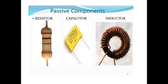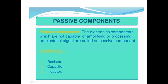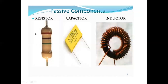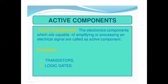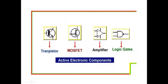Passive components are not capable of amplifying or processing — that is the passive component. Examples are resistor, capacitor, and inductor. Active components are capable of amplifying or processing electrical signals. Examples are transistor, MOSFET, amplifier, and logic gates. These are the symbols of active electronic components. In summary: active components deliver power or energy to the circuit, while passive components utilize power or energy.